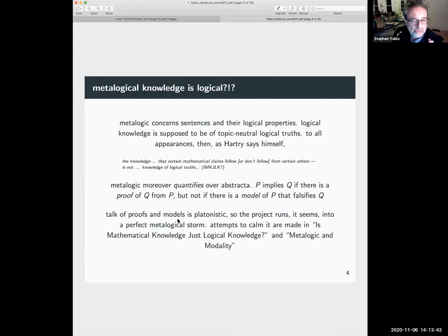Metalogic, moreover, quantifies over abstracta. P implies Q if there is a proof of Q from P, but not if there is a model of P that falsifies Q. Well, this is a very platonistic way of talking, so the project runs into a perfect metalogical storm, and attempts to con this storm are made in these two papers, mathematical knowledge just logical knowledge and metalogic and modality.